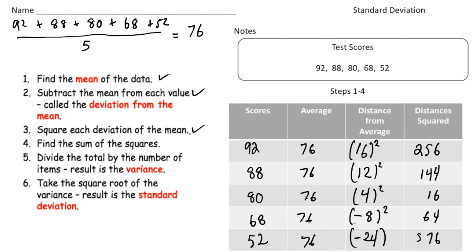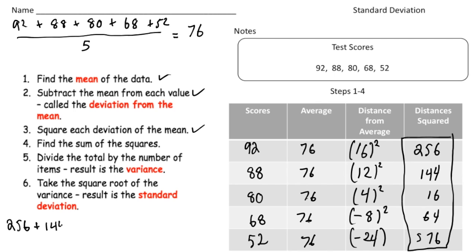Step number four: find the sum of all of those squares. So I add 256 plus 144 plus 16 plus 64 plus 576, and I get a sum of 1056.